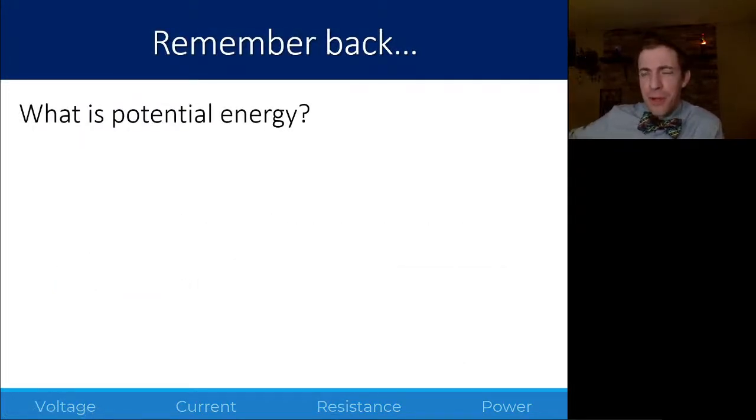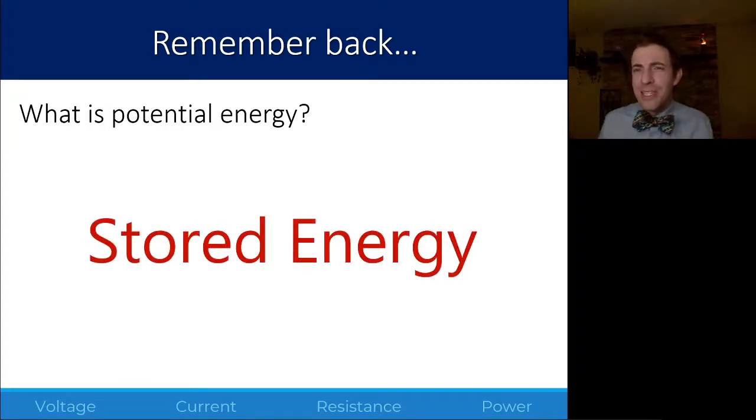If you remember back to our energy unit, we talked about potential energy, kinetic energy, and other different forms of energy. Potential energy was essentially just energy that is stored up in some fashion. Gravitational potential energy was energy stored based on position from gravity. Elastic potential energy was energy stored by distorting some sort of elastic band or spring.